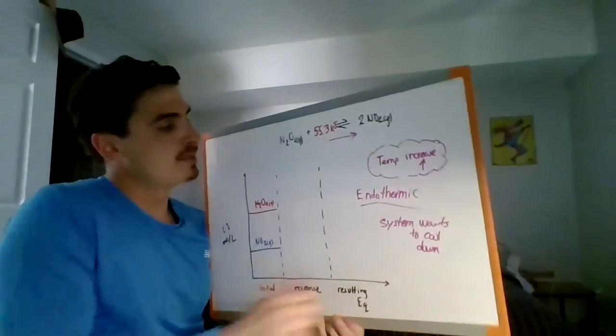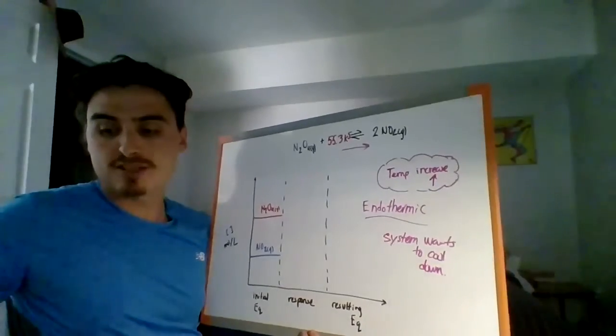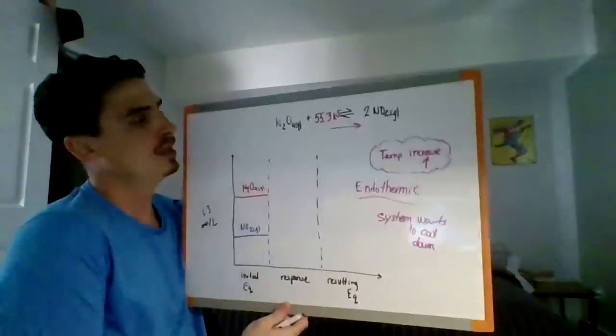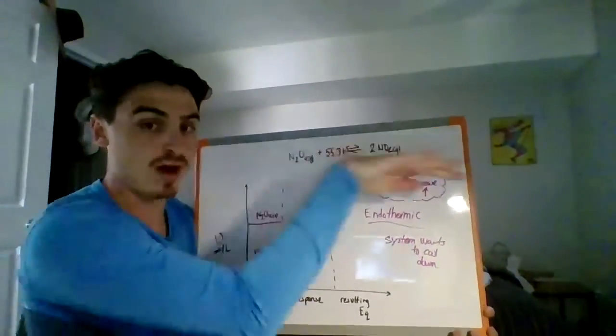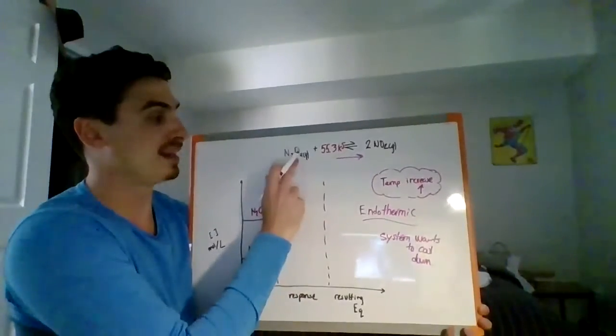So what that means, guys, is if I just look at the left and right side, if my reaction is shifting to the right, I'm going to be reacting more of this. So this is going to go down.